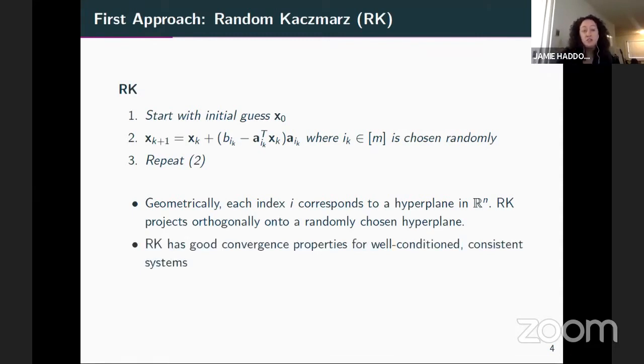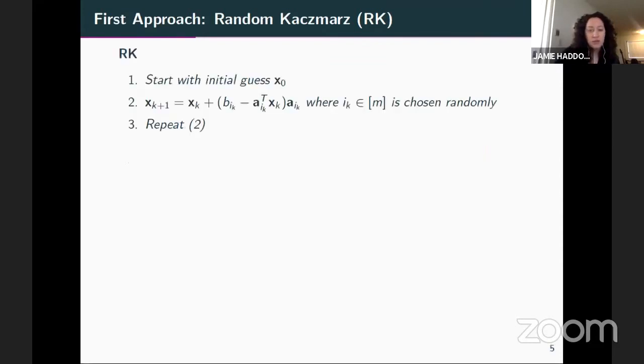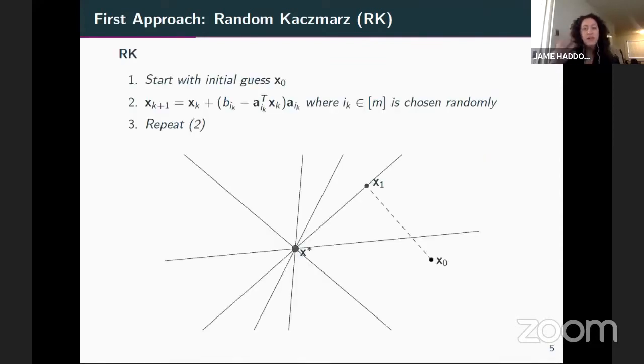And you just do this over and over again. And for a consistent system of equations, you're guaranteed that you'll converge to the solution. So each of the indices in your system of equations corresponds to a hyperplane, and RK is just projecting orthogonally onto these randomly chosen hyperplanes. And it's known that RK has good convergence properties when the system of equations is consistent and the matrix A is decently conditioned.